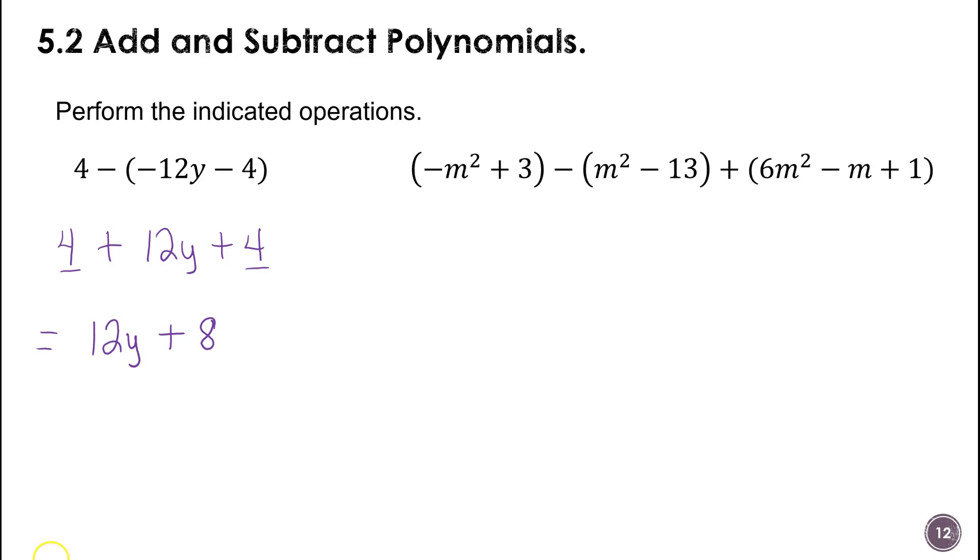So on this one, I'm going to write it out. Make this plus. That's going to be a negative and a positive. And then I can take everything out of parentheses. All right, so I'm going to have negative m² plus 3 plus negative m² plus 13 plus 6m² minus m plus 1. Now I could write this as a plus negative m. I don't want to make it confusing, but that's perfectly fine.